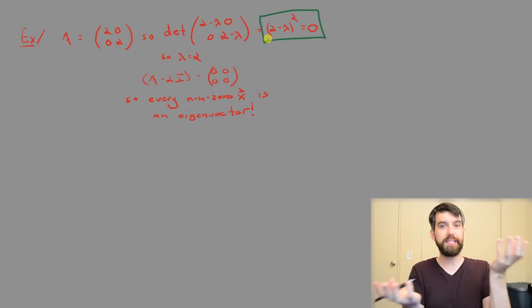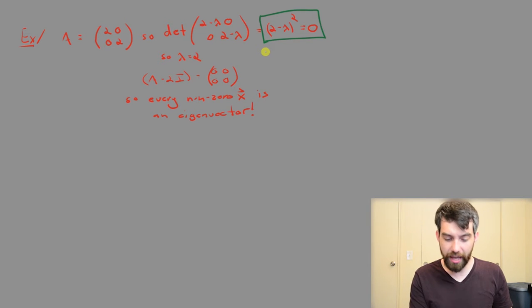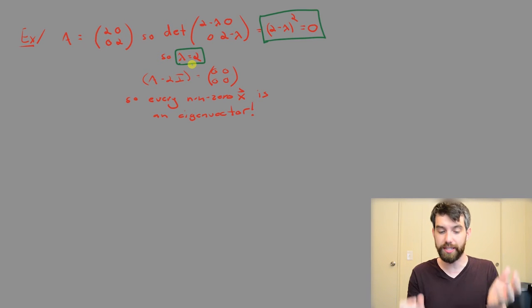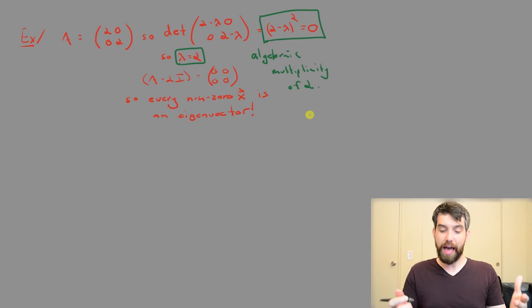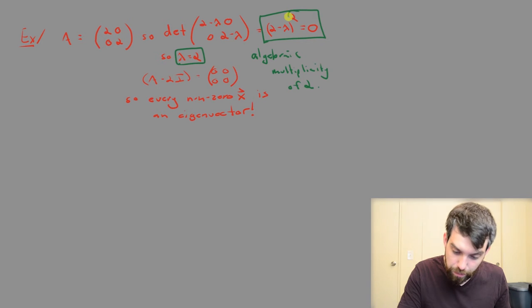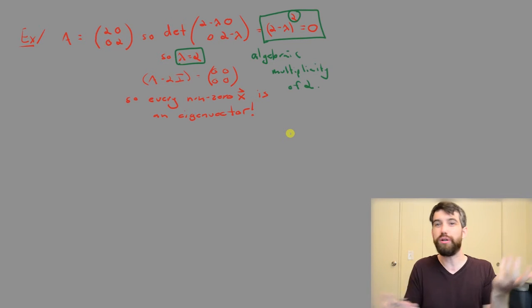But those roots may be distinct, different values as we saw in the previous case, or they may overlap as occurs in this case. So what we get is only a single solution, lambda equal to 2, not the two different solutions we had before. And what we say is that this is going to have algebraic multiplicity of 2. This refers to the fact that we've got this exponent of 2 in the characteristic equation, that this particular root is squared, and so it sort of occurs twice even though it's just the one root, or it overlaps.